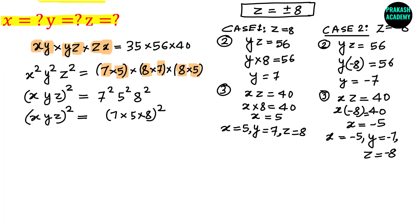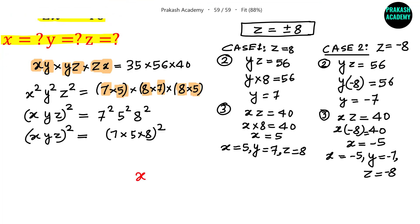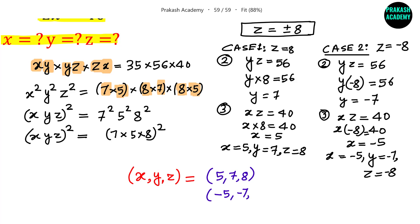So for this system of equations we have two pairs of solutions: the first pair is (5, 7, 8) and the second pair is (−5, −7, −8). These are the two possible solution sets. If you want, you can verify by substituting back into the original equations to check whether they are satisfied.